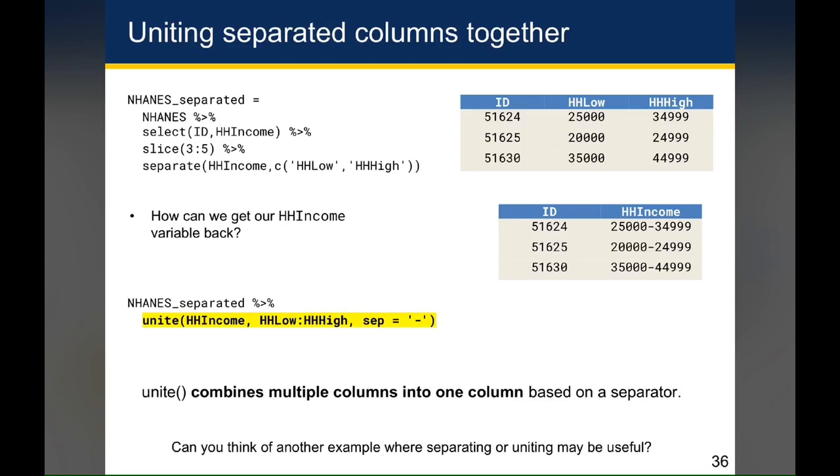So whereas the separate function required you to provide the column that you want to split, followed by a character vector containing the columns that you want to generate, the unite function asks you to provide the column that you want to newly create, followed by the columns that you want to unite. And unlike the separate function, the unite function isn't expecting any character vectors. You can just provide it the names of the columns kind of unquoted.